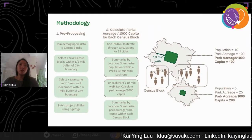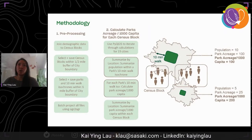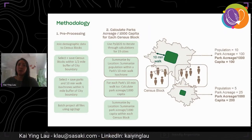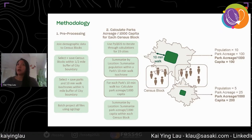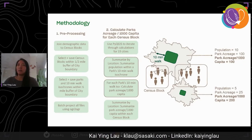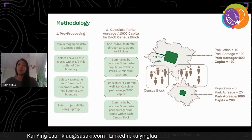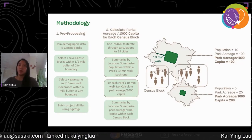There are four main sections within the methodology. The first is pre-processing, which mainly consists of prepping the demographic data, selecting census blocks within a half mile of the city boundary, selecting parks and 10-minute walk isochrones within a half mile buffer of the city boundary, and then projecting everything to the appropriate projections for each location.